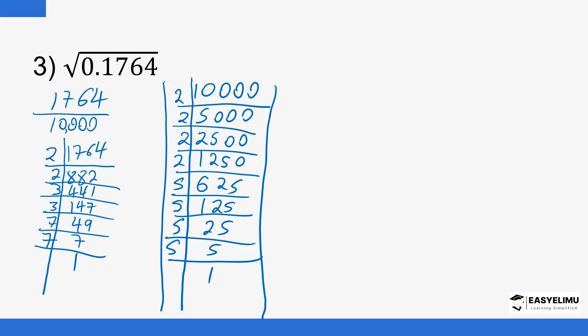So what it means now is to find the square root of 0.1764, which is equal to the square root of 1764 divided by 10,000. So this is going to be the square root of 1764, we have 2 power 2, 3 power 2, and 7 power 2. For 10,000 we have 2 power 4 and 5 power 4.